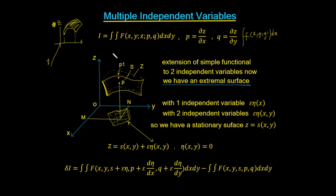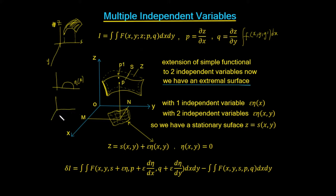So this is our new functional form. We've drawn it out below with x, y, and z axes. In the simple functional case, we would start off with a curve given by eta of x. But instead of a curve eta of x, we're going to have eta of both x and y. So instead of having a family of curves — epsilon, eta, x — we're going to have a family of surfaces.